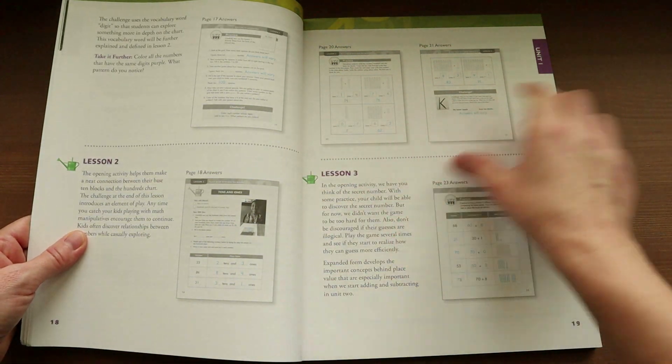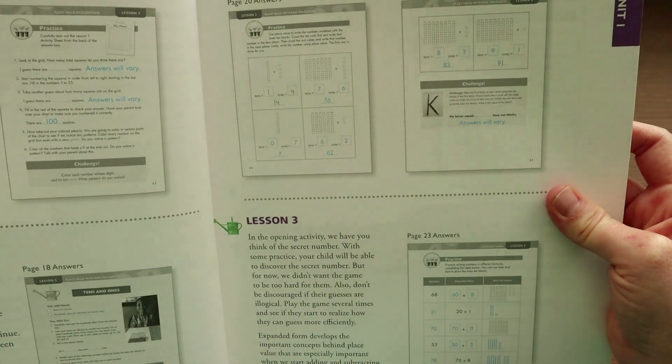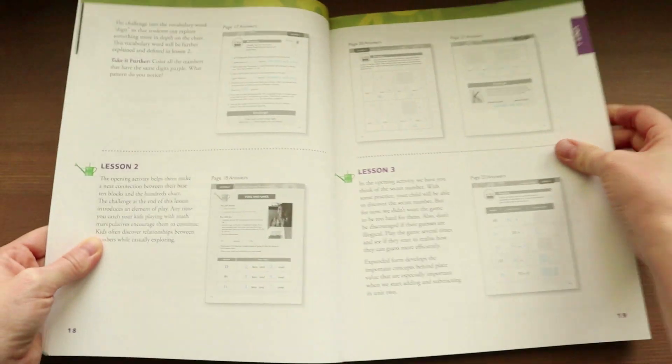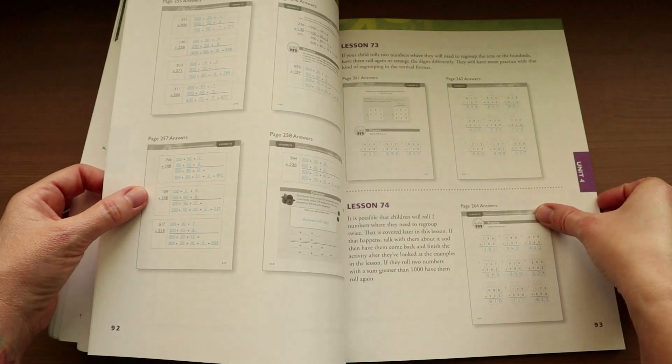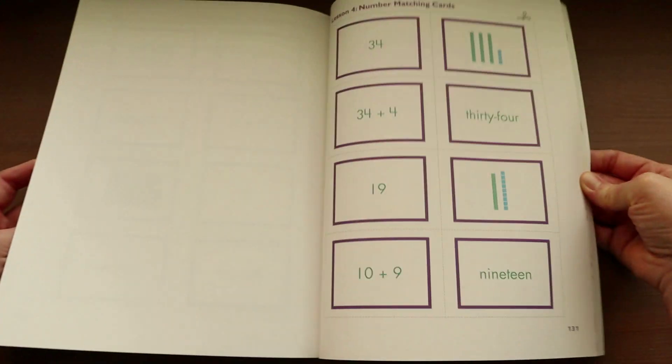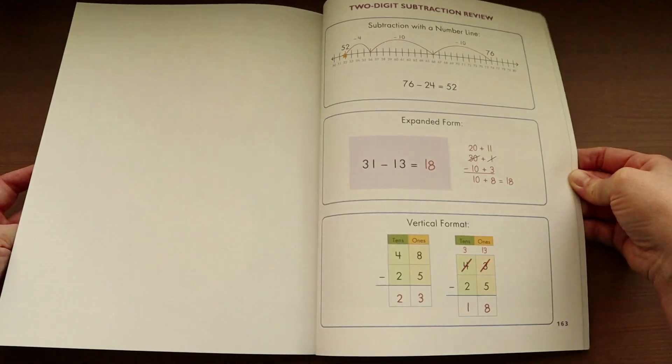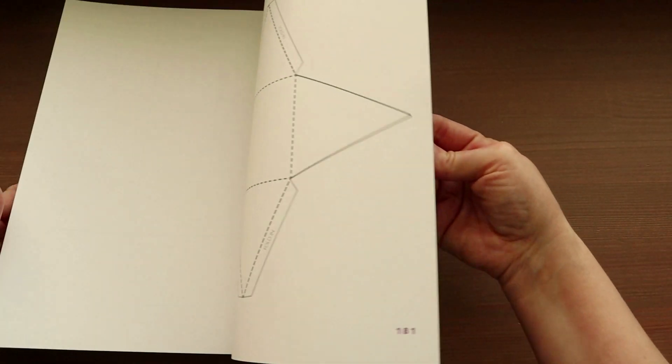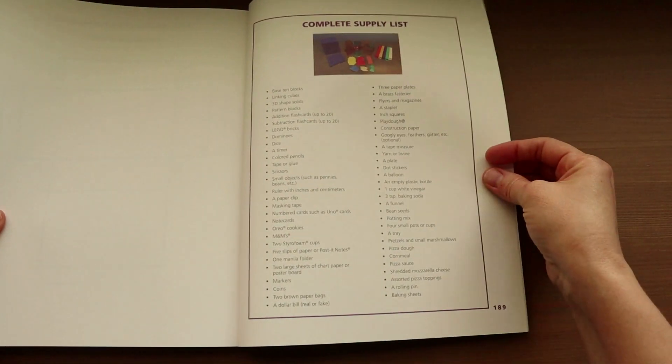Here is what the answer key looks like. It'll give you a picture of the page, and the answers will be written in blue. As you flip towards the back of the book, that is where you will find all of the activity pages for the lessons that you are going to need them for. And if you go all the way to the back, you will get the supply list for the entire year.